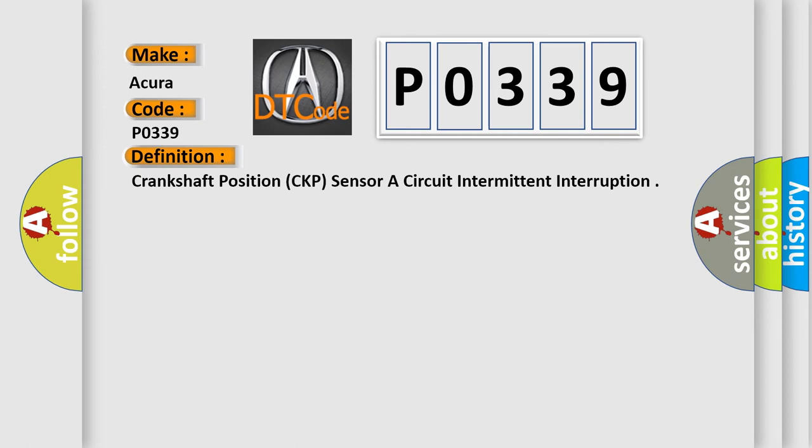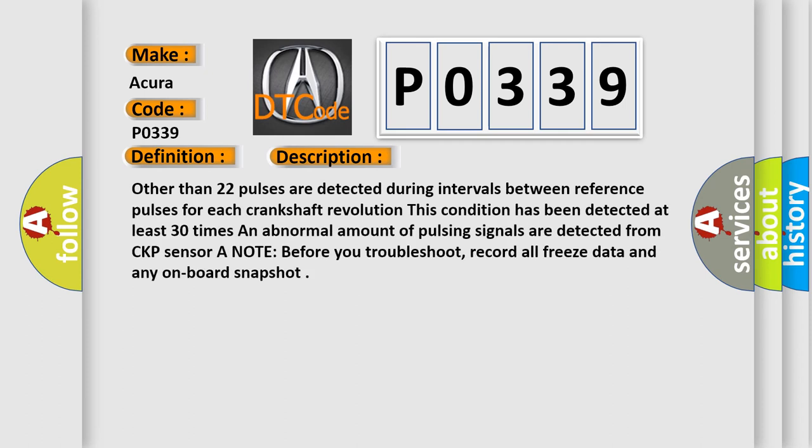And now this is a short description of this DTC code. Other than 22 pulses are detected during intervals between reference pulses for each crankshaft revolution. This condition has been detected at least 30 times. An abnormal amount of pulsing signals are detected from CKP Sensor. A note: before you troubleshoot, record all freeze data and any onboard snapshot.